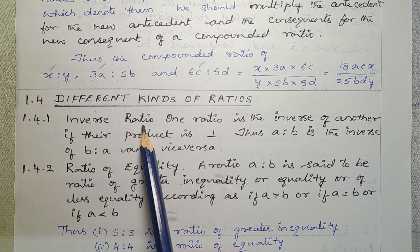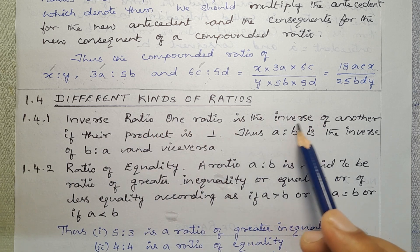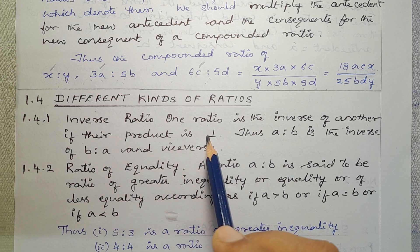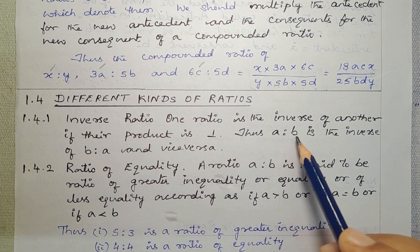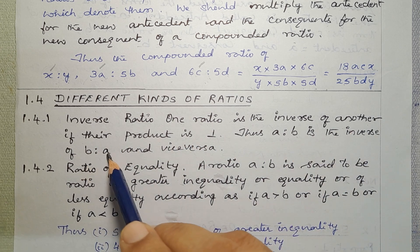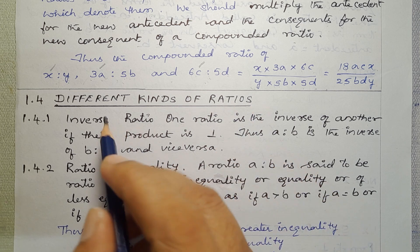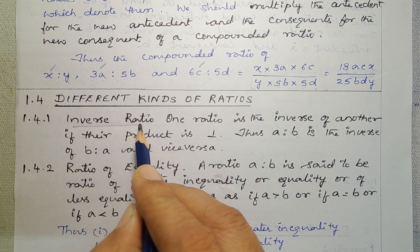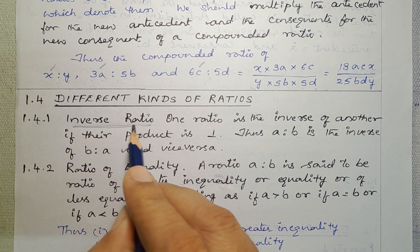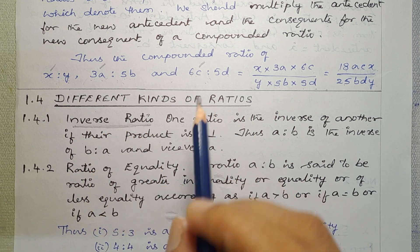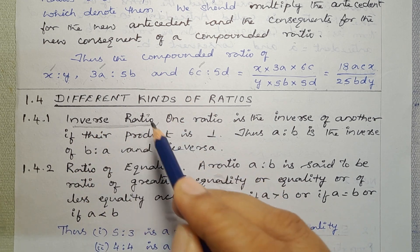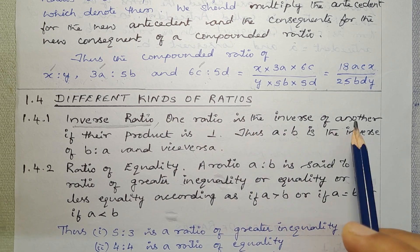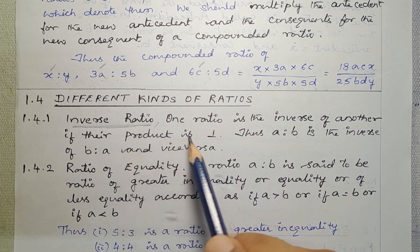Sub-Article No. 1.4.1 — Inverse Ratio. One ratio is the inverse of another if their product is 1. Thus, A is to B is the inverse of B is to A, and vice versa.